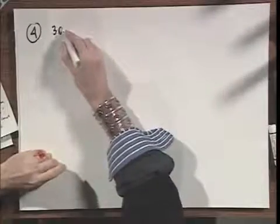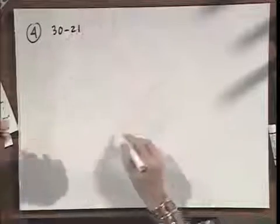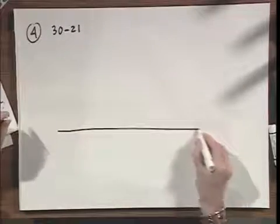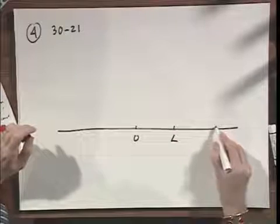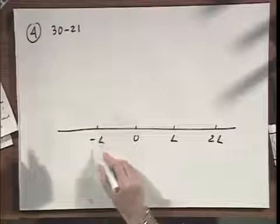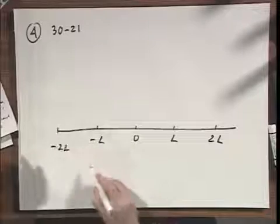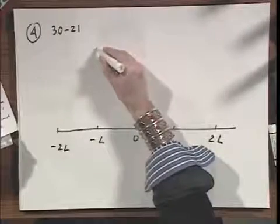Problem 4 is 30-21. Here, linear axis: 0, L, 2L, minus L, minus 2L. And here in space, perhaps a little bit artificial,